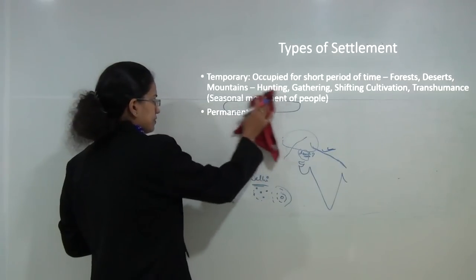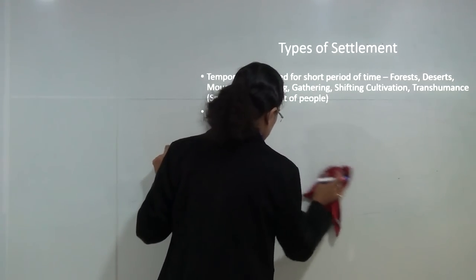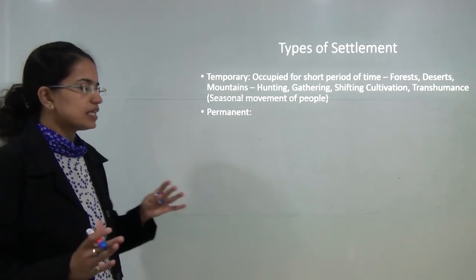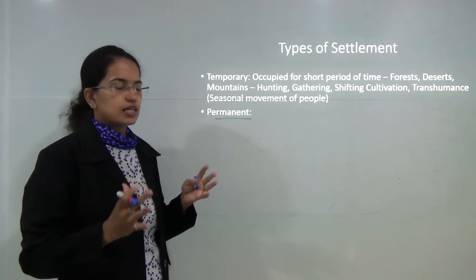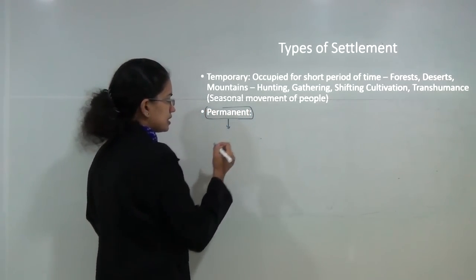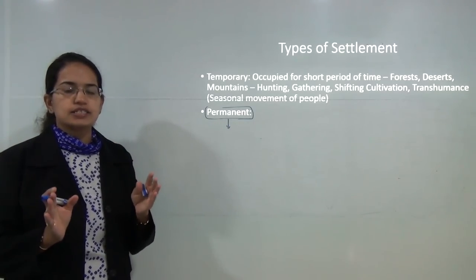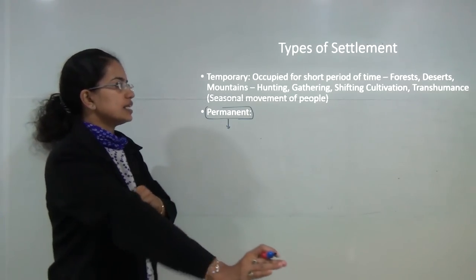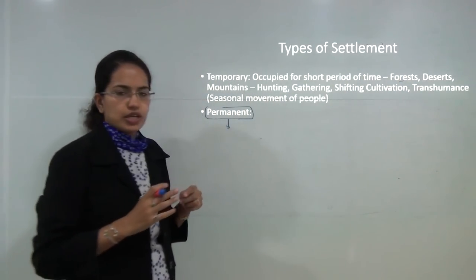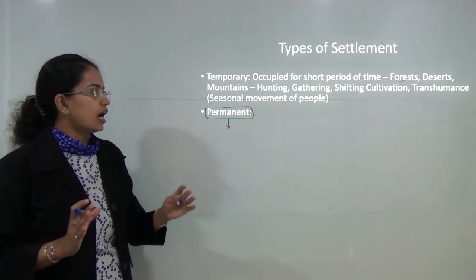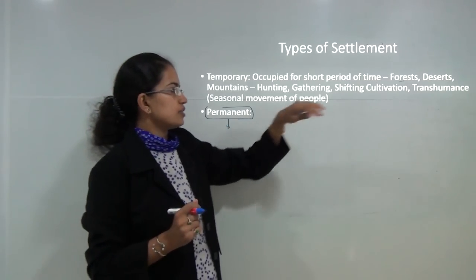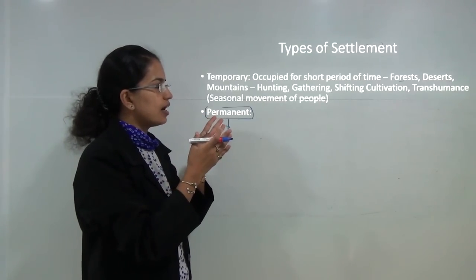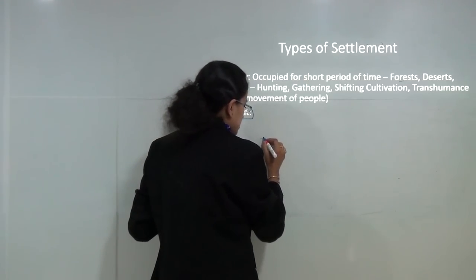Types of settlements can be classified in various ways. The first classification is permanent versus temporary settlements. Permanent settlements have houses built of cement, bricks, and concrete — they are fixed or immovable. Temporary settlements are occupied for a short duration of time; they exist in forests, deserts and mountains, and involve people engaged in hunting and gathering, or shifting cultivation.